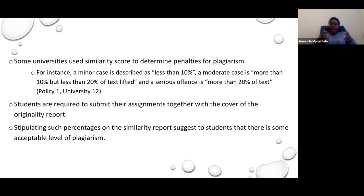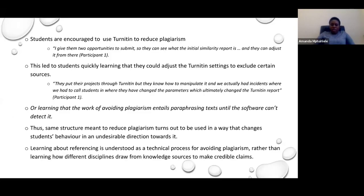Using a percentage only to judge whether plagiarism happened or not suggests to students that there is a certain acceptable level of plagiarism. Students are also encouraged to use Turnitin to reduce plagiarism. One participant says: 'I give them two opportunities to submit so they can see what the initial similarity report is, and they can adjust it from there.' Because of this, students learn very quickly how to manipulate the system so that they can get an acceptable similarity index score.